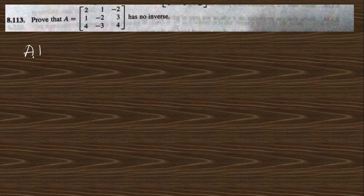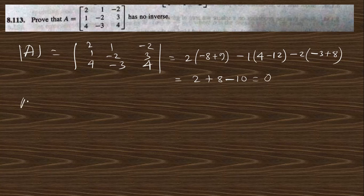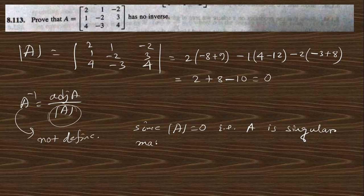For the next part, we prove the matrix has no inverse. Computing det(A) for the matrix [1, 4, 1; -2, -3, -2; 3, 4, ...]: expanding gives 2 - 8 + 9 - 1 - (4 - 12) - 2(-3 + 8) = 2 + 8 - 10 = 0. Since det(A) = 0, A⁻¹ = adjoint(A)/det(A) is not defined. Since det(A) = 0, this is a singular matrix, and therefore A⁻¹ is not possible.